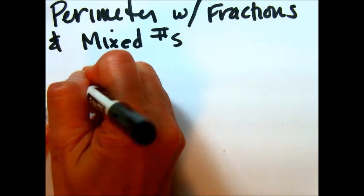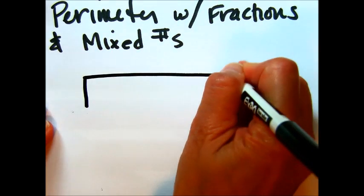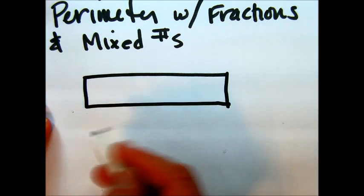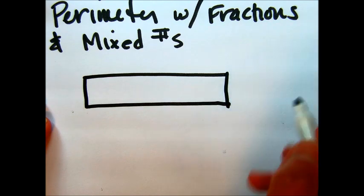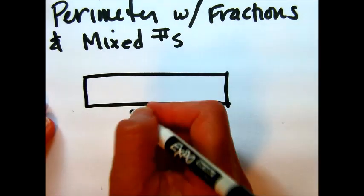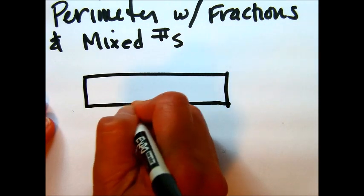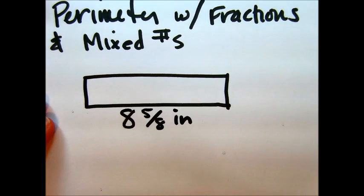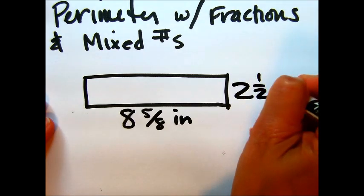The first example is going to be a rectangle. Remember, perimeter is a one-dimensional form or unit of measurement. If we're working in inches, then the answer will reflect that and just be in inch form. It's not going to be inch squared or inch cubed. Let's say that we have 8 5/8 inches on the length and 2 1/2 inches on the width.